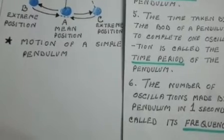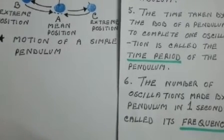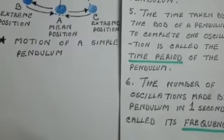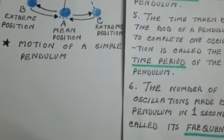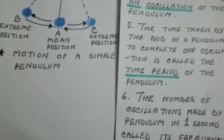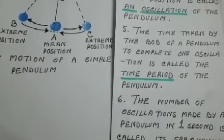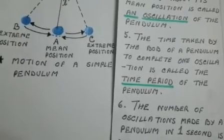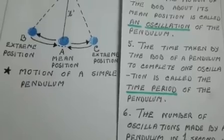The number of oscillations made by a pendulum in one second is called its frequency. In the next video, I will explain some of the numerical problems related to the time period of the pendulum.